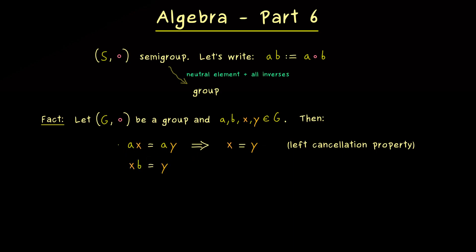In a similar way we can also consider the equation with b from the right hand side. The result is the same, because we can cancel the b from the right, so we get x = y as well. This is the right cancellation property, and it works in every group.